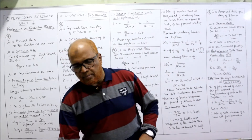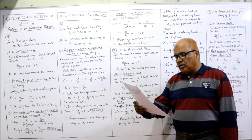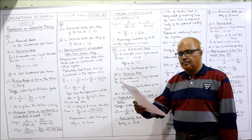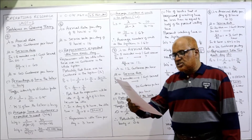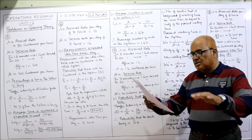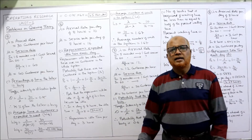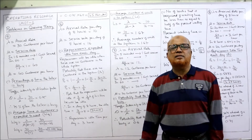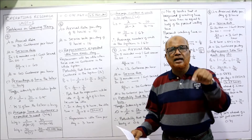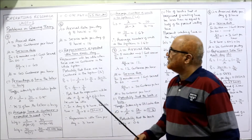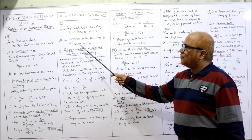Problem number six: A TV repairman finds that the time spent on his job has an exponential distribution with mean 30 minutes — that means one TV set will be serviced in 30 minutes. He repairs sets on a first-come-first-served basis. The arrival of sets is approximately Poisson with an average rate of 10 per 8-hour day. So arrival rate per day of 8 hours is 10 sets.